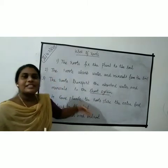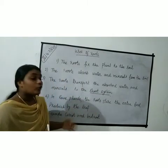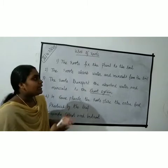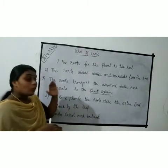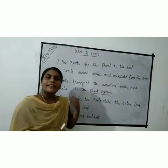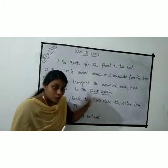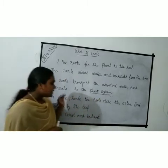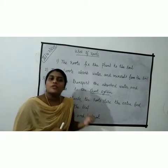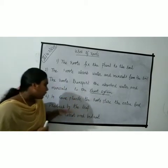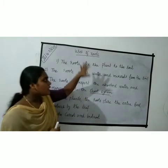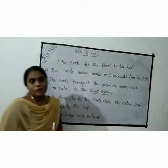To summarize the uses of roots: roots fix the plant to the soil; roots absorb water and minerals from the soil; roots transport the absorbed water and minerals to the shoot system; and in some plants, roots store extra food produced by the leaves — for example, carrot and beetroot.